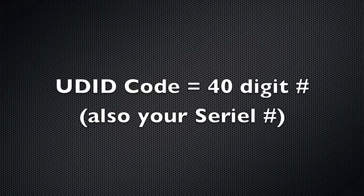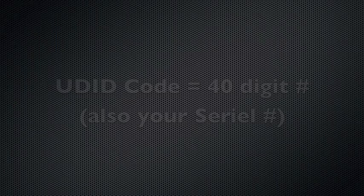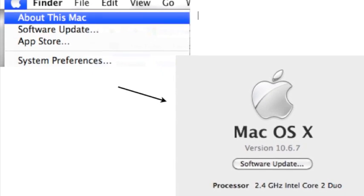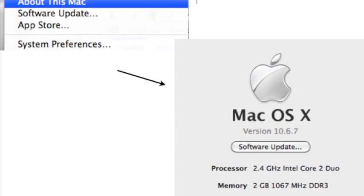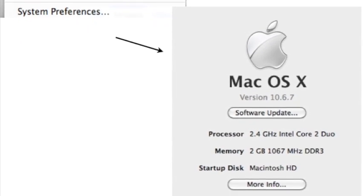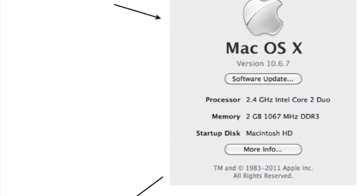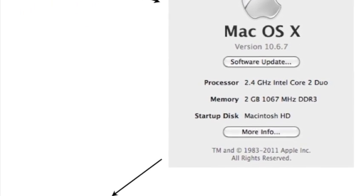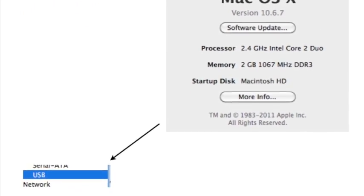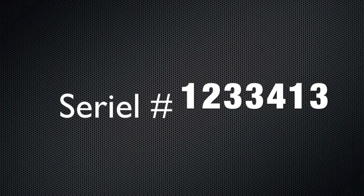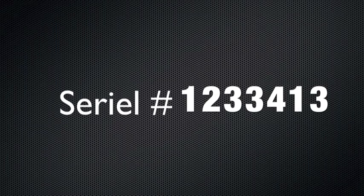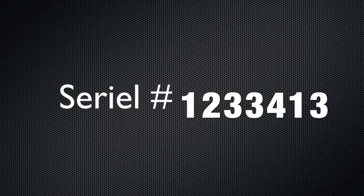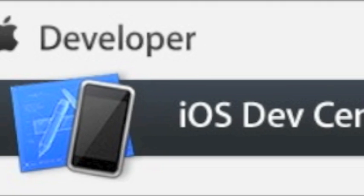You will have to either find someone who is registered and have them add your device to their device list. To get your device registered, you need to find your UDID code. Do this by going to About This Mac, then More Info, go down to USB, and find your connected iDevice. Click on it — whether it's your iPhone, iPad, or iPod touch — and go down to your serial number. To the right of that is the 40-digit hex number; copy that.